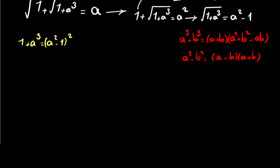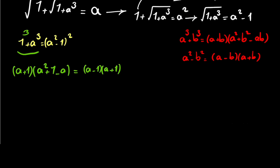On the left side, we have a cubed plus 1 cubed, so we can write it as a plus 1 times a squared plus 1 minus a. On the right side, we can write a minus 1 squared times a plus 1 squared.